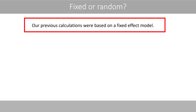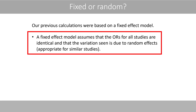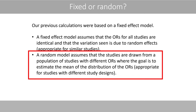Our previous calculations were based on a fixed-effect model, which assumes that the odds ratios from all studies are identical and that variation seen is due to random effects — appropriate for similar studies. A random-effects model assumes that the studies are drawn from a population of studies with different odds ratios, where the goal is to estimate the mean of the distribution of odds ratios, and is appropriate for studies with different study designs.